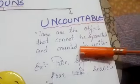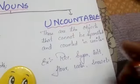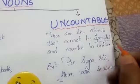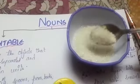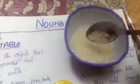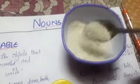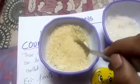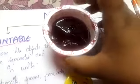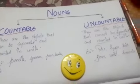Uncountable nouns refer to things which cannot be separated and counted in units. For example, I have sugar here — can you count the crystals of sugar? No, we can just say a bowl of sugar. The same way, I have a bowl of rice — we won't be able to count each grain of rice, we can just say a bag of rice or a bowl of rice. And here I have your favorite thing, jam — you can just say a box of jam. Yummy, right?